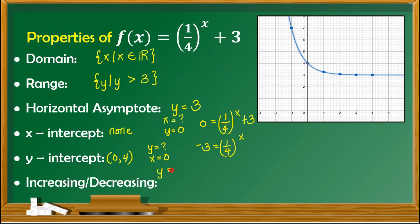Putting 0 in for x, we have y equals 1 fourth raised to 0, plus 3. Any number except 0 raised to the power of 0 gives us 1. Therefore this is equal to 1 plus 3, so the value of y is 4. As for increasing or decreasing, looking at the graph, as x increases y decreases, and as x decreases y increases — it's the opposite. Checking the function, the value of a is 1 fourth, which is between 0 and 1, therefore the function is decreasing.